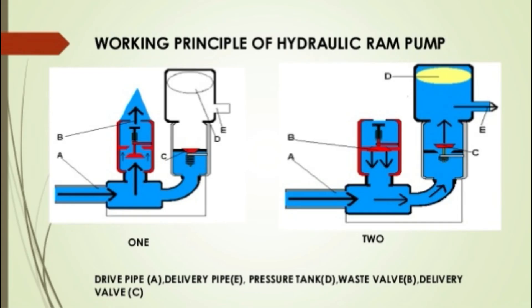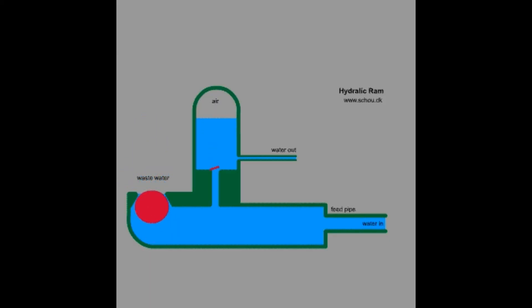What is the hydraulic ram pump? It takes in water at relatively low pressure and high flow rate and outputs water at a higher hydraulic head and lower flow rate. The device uses the water hammer effect to develop pressure that lifts a portion of the input water that powers the pump to a point higher than where the water started.